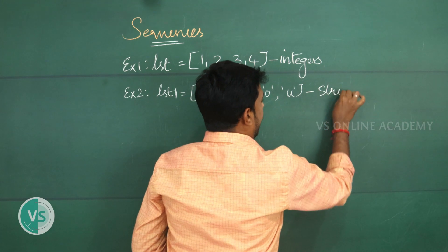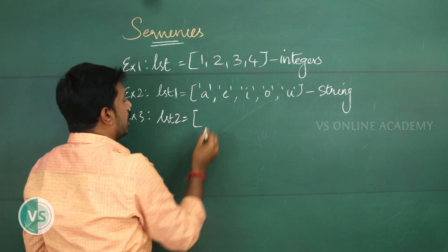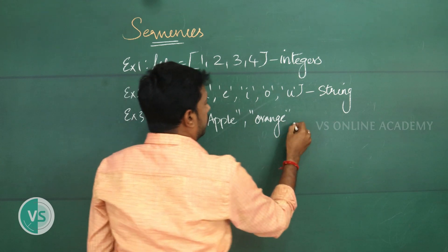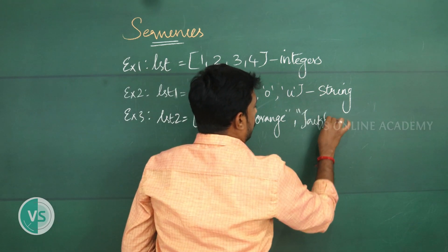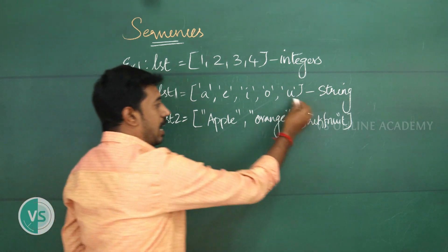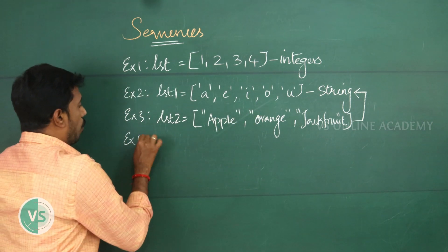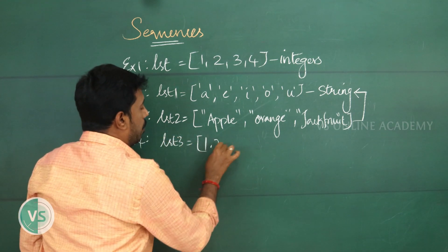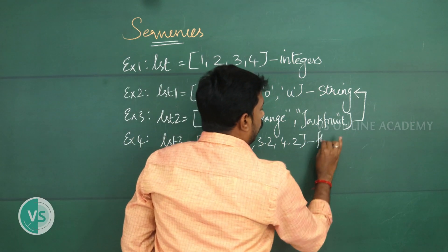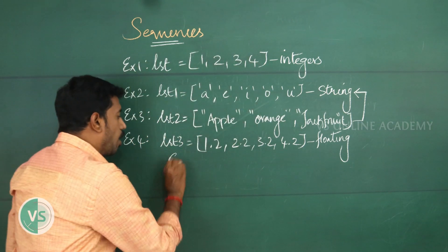These are string data. Then example three: lst2 contains apple, orange, jackfruit — these are also multiple elements separated by a comma, and each element is a string. Example four: lst3 contains 1.2, 2.2, 3.2, 4.2, and so on — these are floating point values.